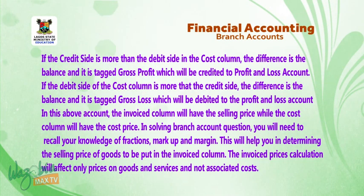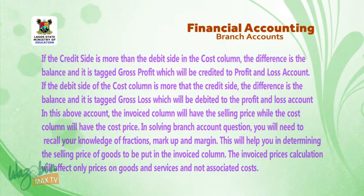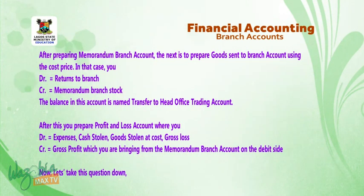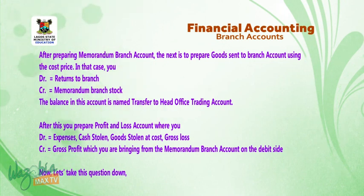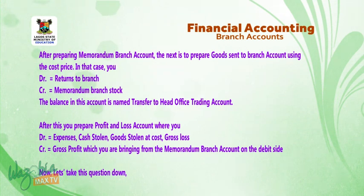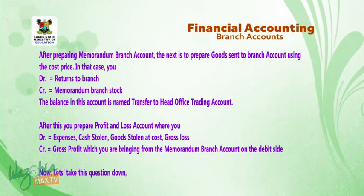In solving branch account questions you will need to recall your knowledge of fractions, markup, and margin to help determine the selling price of goods in the invoice column. The invoice price calculation affects only prices on goods and services and not associated costs. After preparing the memorandum branch account, the next step is to prepare the goods sent to branch account using cost price — debit returns to branch and credit memorandum branch stock. The balance is named transfer to head office trading account. Then prepare the profit and loss account, debiting expenses, cash stolen, goods stolen at cost, and gross loss, and crediting gross profit from the memorandum branch account.